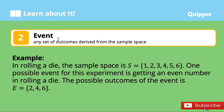Next is event. It is any set of outcomes derived from the sample space. For example, in rolling a die, the sample space is equal to 1, 2, 3, 4, 5, and 6. One possible event for this experiment is getting an even number in rolling a die. The possible outcomes when you get an even number in rolling a die are 2, 4, and 6.